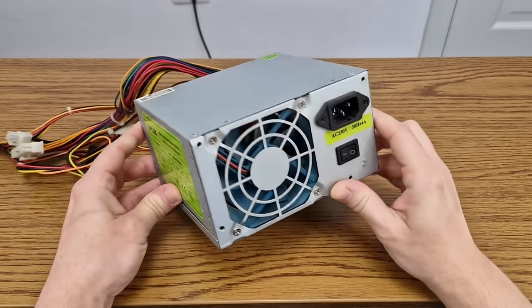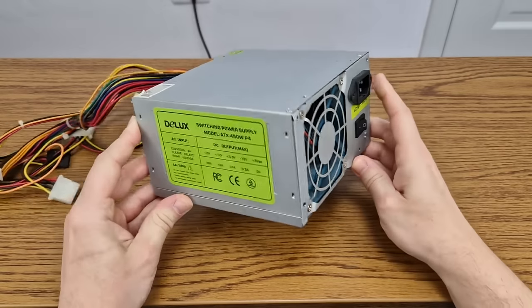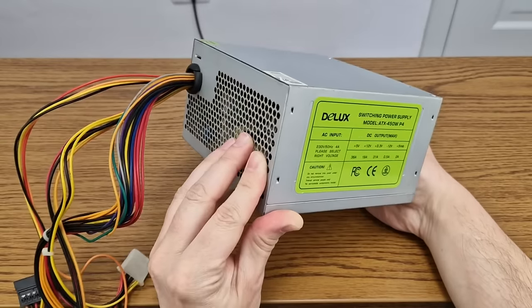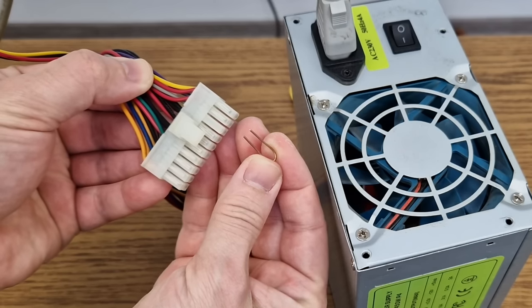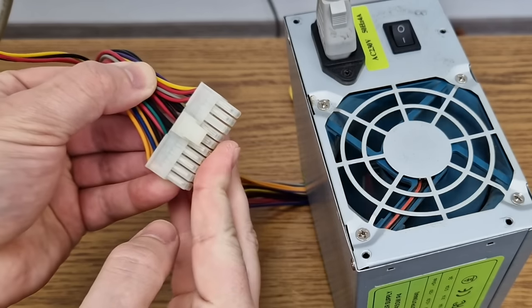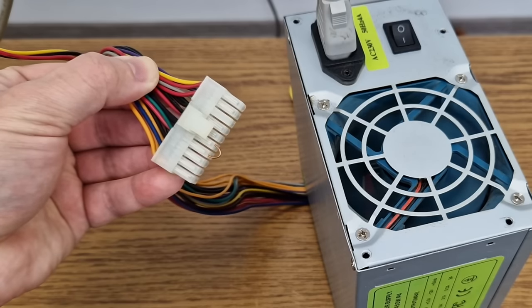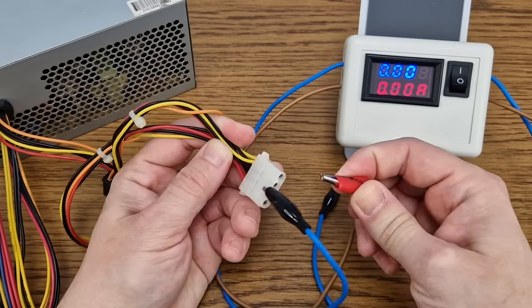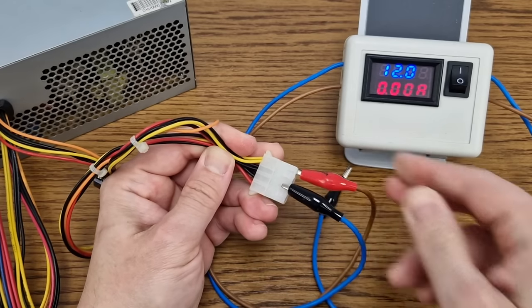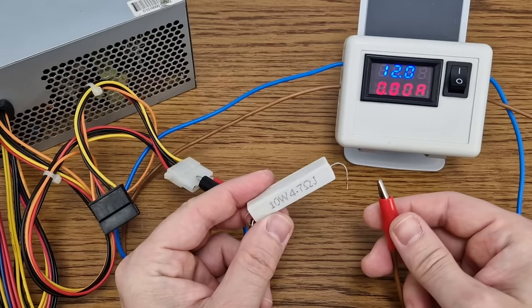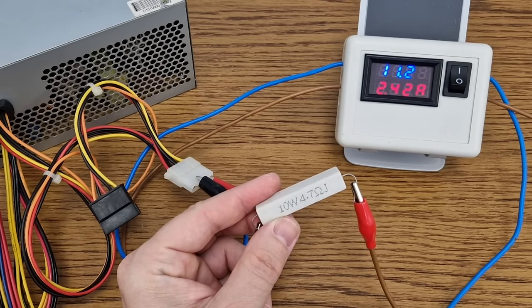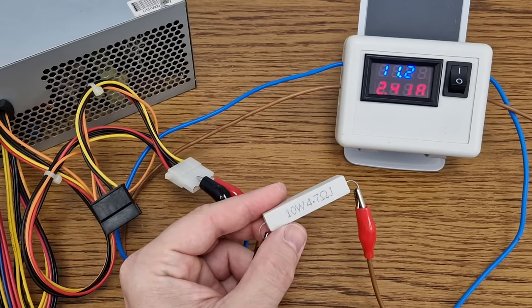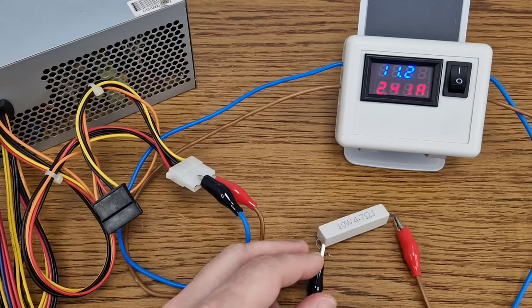I have this ATX power supply at home from an old PC. But first I need to make sure that it works, because I already have other broken power supplies. To turn it on I will short the green wire with a black one. Let's test the 12V rail using my volt ammeter. I will connect a simple ceramic resistor as a load. But with a current consumption of only 2.4A, the voltage drops almost to 11V.